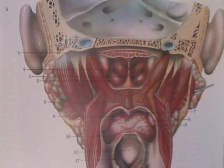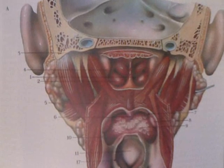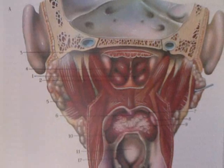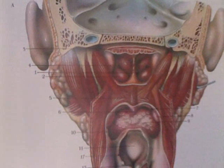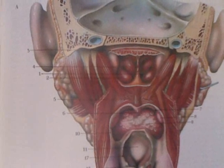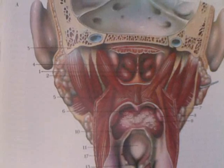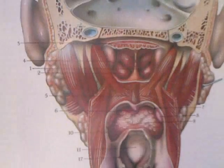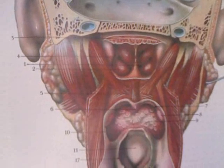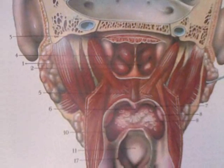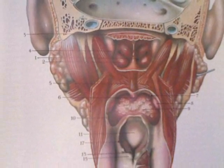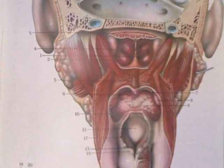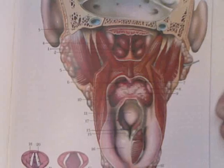Number one are the nostrils. Number two is the inferior muscle of the nostrils. Number three are the tonsils. Number five is the soft palate. Number six is the uvula. Number seven is the pharynx. Number eight are the tonsils. Number nine is the tongue. Number eleven is the epiglottis. Number twelve is the esophagus. Number thirteen is the larynx. And number sixteen is the cricoid cartilage.